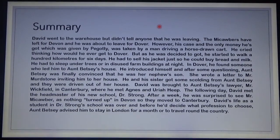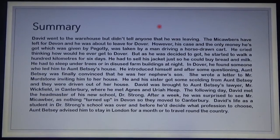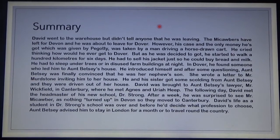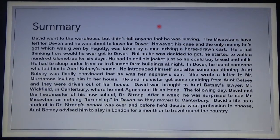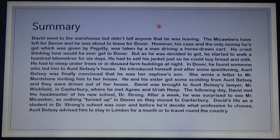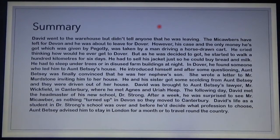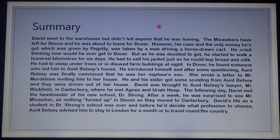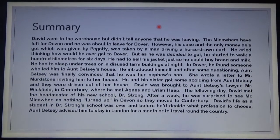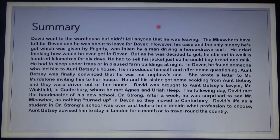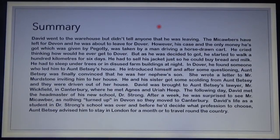He had to sell his jacket just so he could buy bread and milk. He had to sleep under trees or in disused farm buildings at night. In Dover, he found someone who led him to Aunt Betsy's house. He introduced himself and after some questioning, Aunt Betsy was finally convinced that he was her nephew's son. She wrote a letter to Mr. Murdstone inviting him to her house. He and his sister got some scolding from Aunt Betsy and they were driven out of her house. David was brought to Aunt Betsy's lawyer, Mr. Wickfield, in Canterbury, where he met Agnes and Uriah Heep.